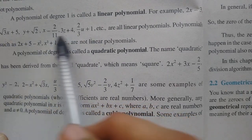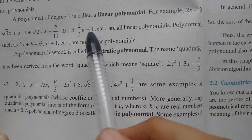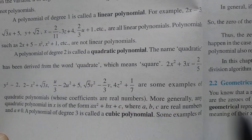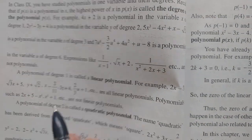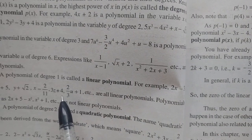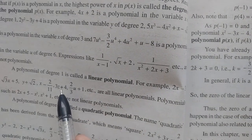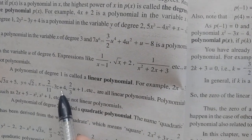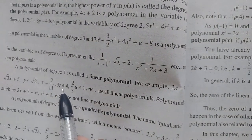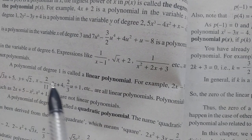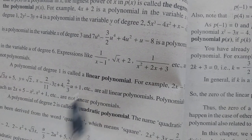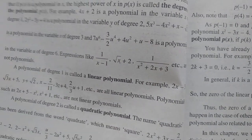All these are examples of linear polynomials. Normally, a linear polynomial has degree 1. For example, 3z plus 4 is a linear polynomial. These are various types of linear polynomials.